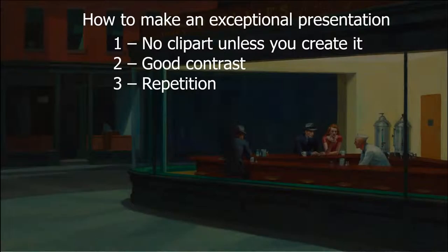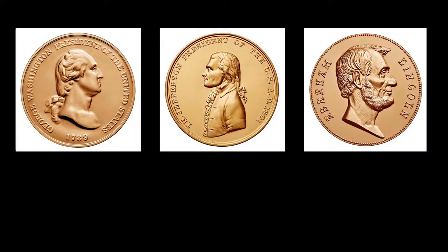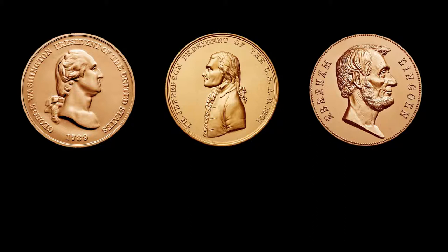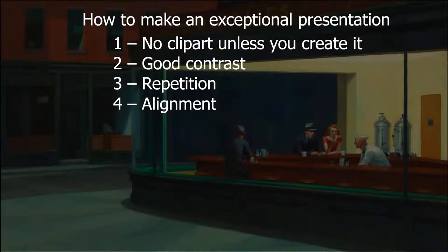The fourth item is alignment. Alignment means when I go from slide to slide to slide, if there is an object that is on each one of those slides, it should never move — it should always be aligned in the same place on each slide.